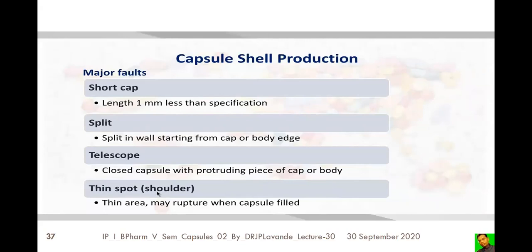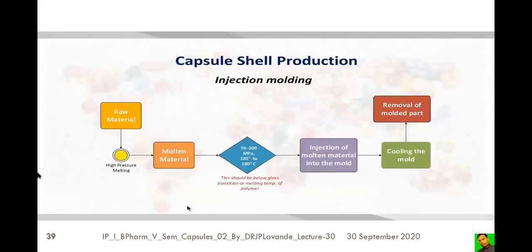Telescoping refers to a closed capsule with a protruding piece of cap or body fitting one into another completely, or where the orientation of the cap or body is changed so the closed portion enters the body instead of fitting correctly. Thin spot is a thin area in the shell wall that ruptures when filling pressure is applied. These are all the different faults found during capsule shell production.